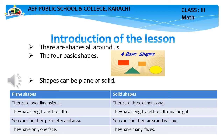Plain shapes have length and breadth. Solid shapes have length, breadth, and height. For plain shapes you can find their perimeter and area, and for solid shapes you can find their area and volume.